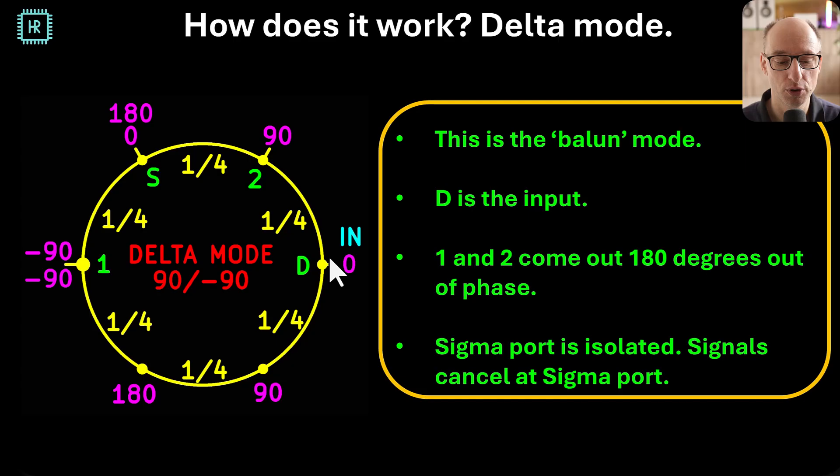Let's have a look at the delta mode. So in the delta mode, you go in here and you can do the exact same exercise. The only thing you see is that port 2 is now at 90 degrees and port 1 is at minus 90 degrees, and the sigma port ends up canceling out. So this is how you can use this thing as a balun: you go in with a single ended signal and you come out with two signals which are 180 degrees out of phase.